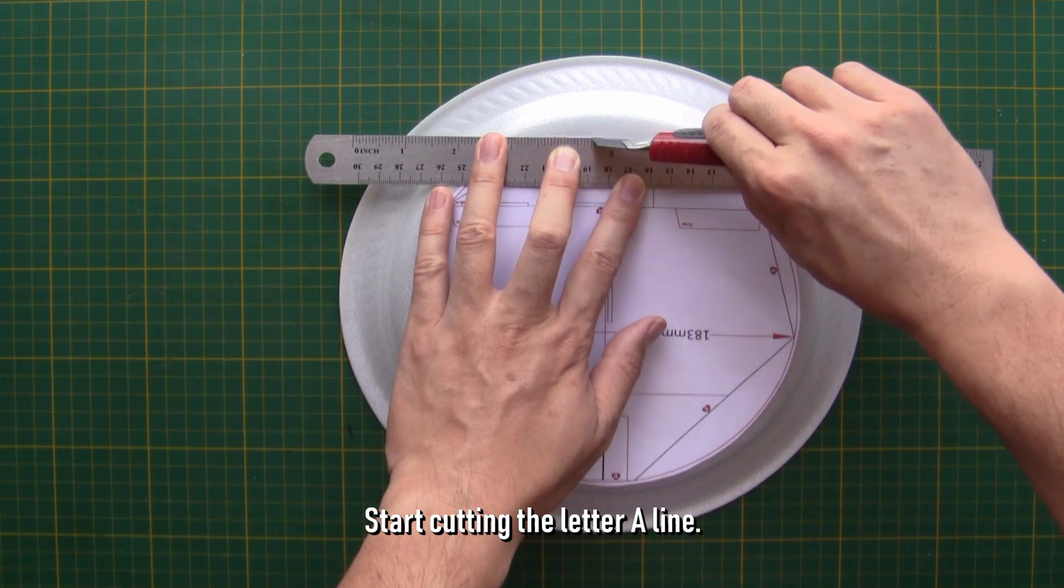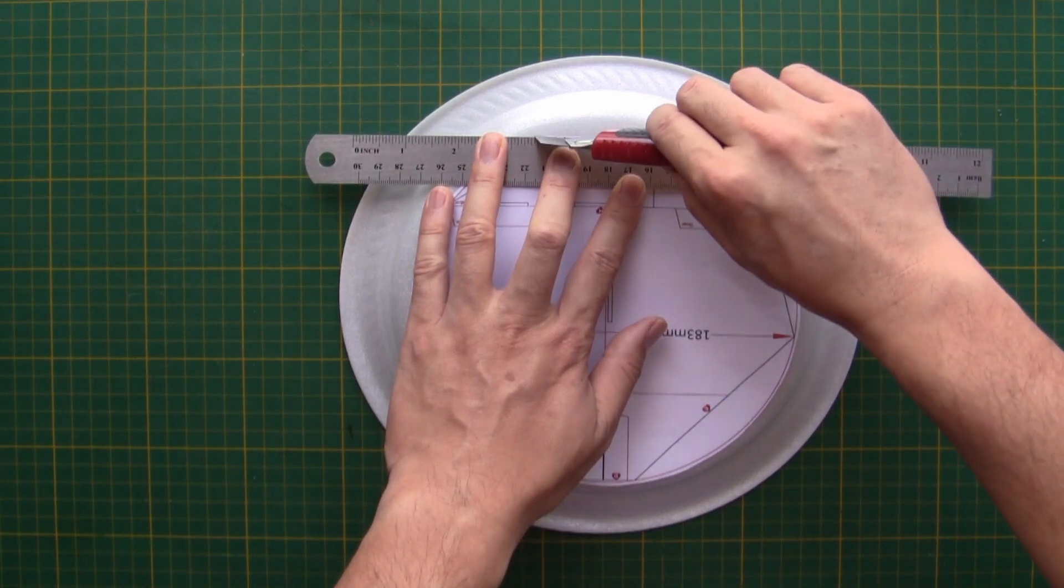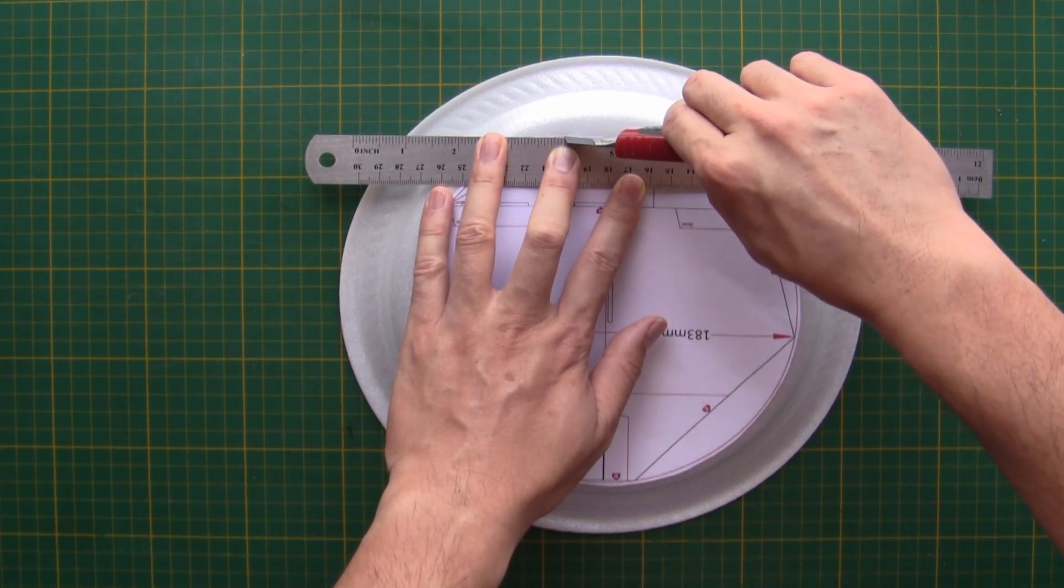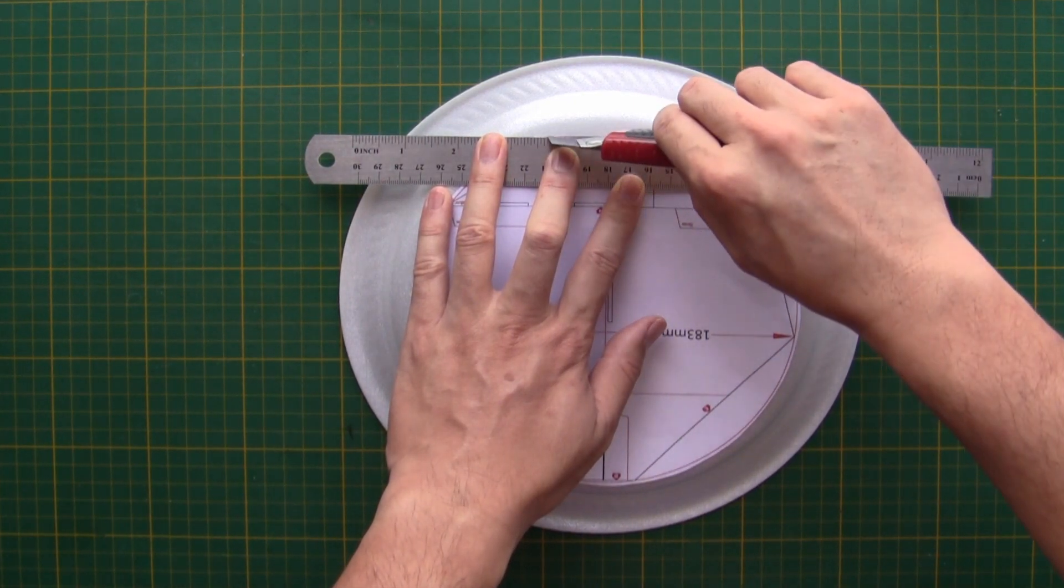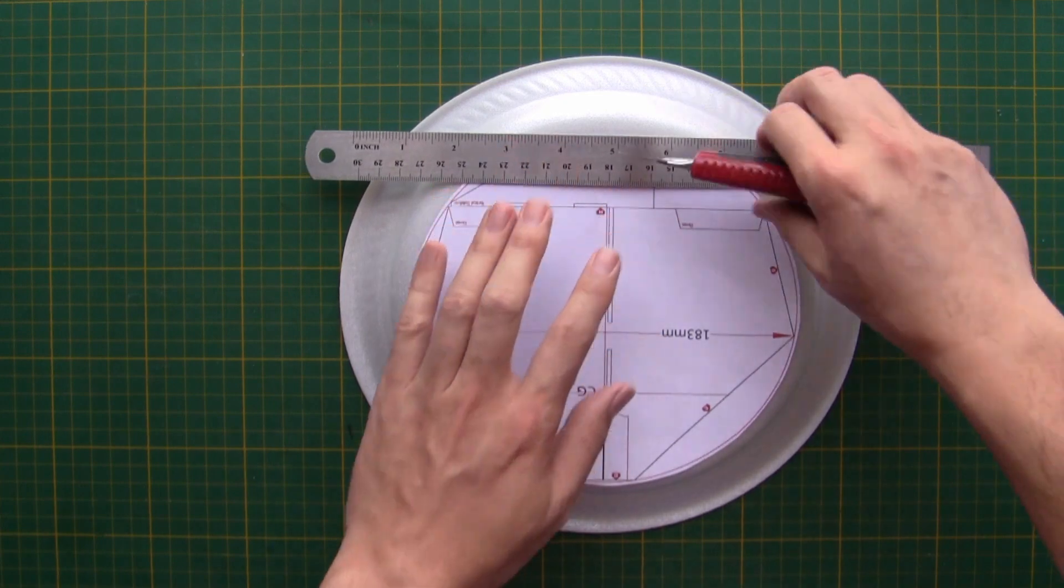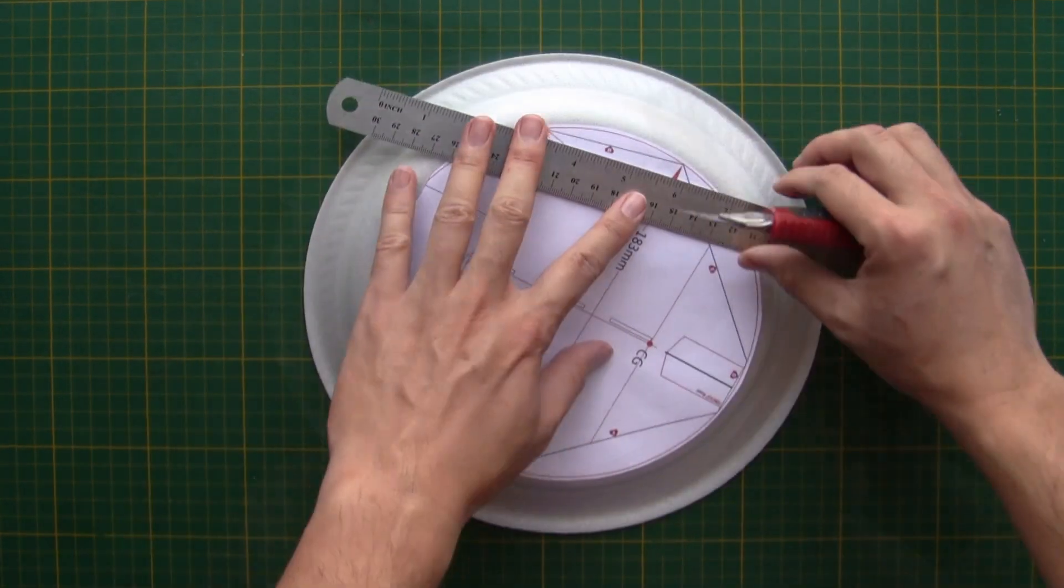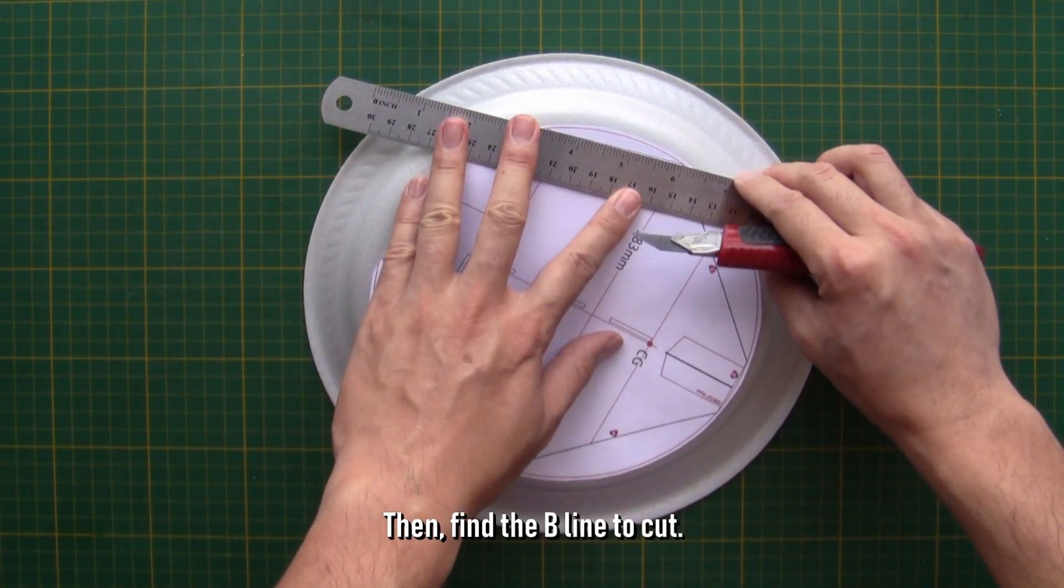Start cutting the letter A line. Then, find the B line to cut.